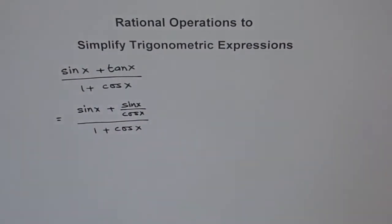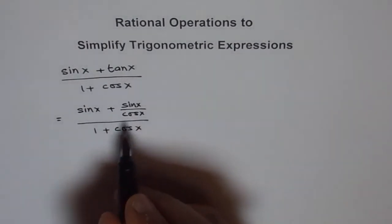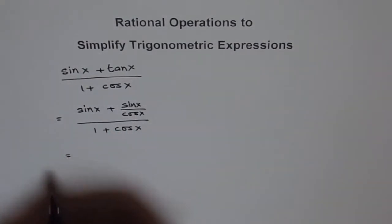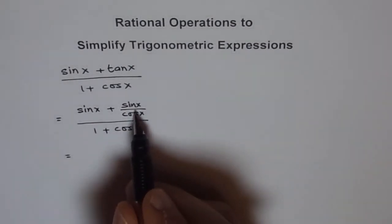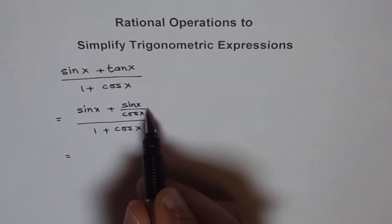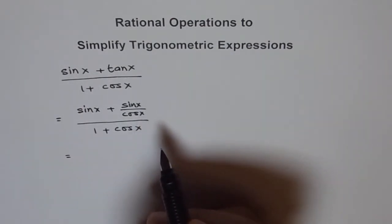Now, whenever you get a fraction, the best thing is to eliminate it. To eliminate cos x from the denominator, we can multiply both numerator and denominator by cos x.